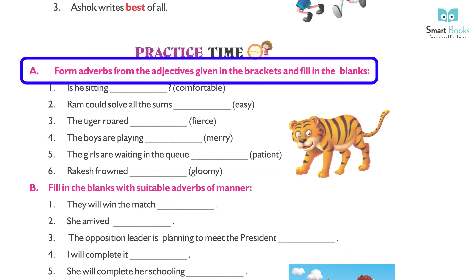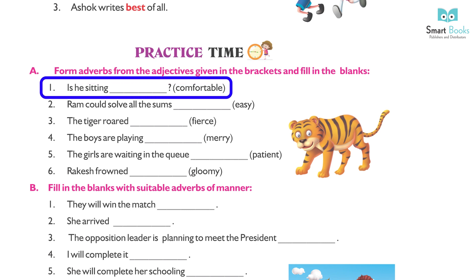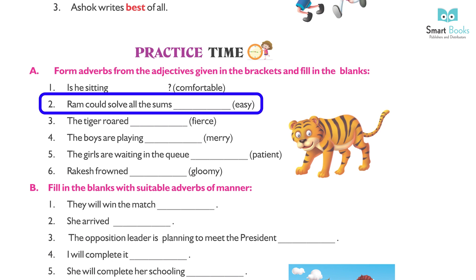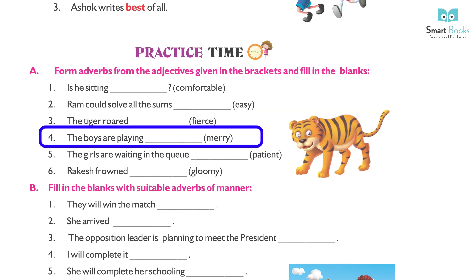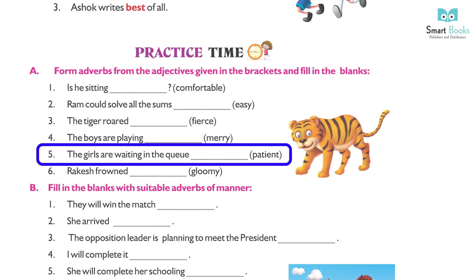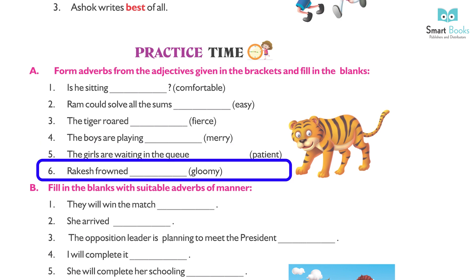Practice time. Form adverbs from the adjective given in brackets and fill in the blanks. 1. Is he sitting comfortably? 2. Ram could solve all the sums easily. 3. The tiger fought fiercely. 4. The boys are playing merrily. 5. The girls are waiting in the queue patiently. 6. Rakesh frowned gloomily.